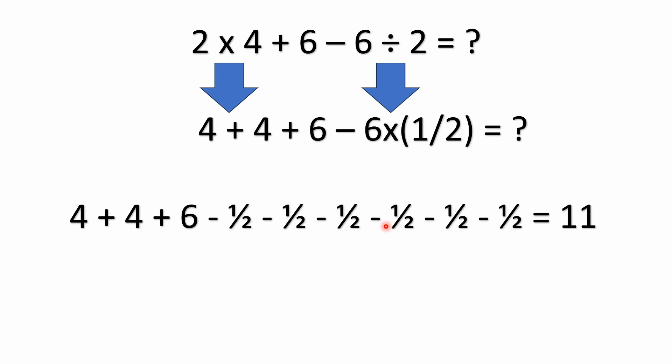Now there may be some people wondering: why don't you just do this left to right? Why are we doing the multiplication and division first? The division is all the way over on the right — we do have the multiplication first, but why does it matter? Why not just go left to right?